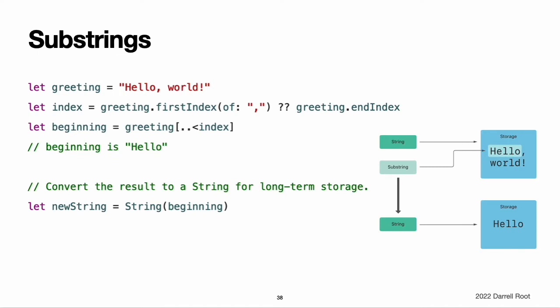Substrings. When you get a substring from a string — for example using a subscript or a method like prefix — the result is an instance of Substring, not another String. Substrings in Swift have most of the same methods as strings, which means you can work with substrings the way you work with strings. However, unlike strings, you use substrings for only a short amount of time while performing actions on a string. When you are ready to store the result for a longer time, you convert the substring to an instance of String. Like strings, each substring has a region of memory where the characters that make up the string are stored. The difference between strings and substrings is that, as a performance optimization, a substring can reuse part of the memory that's used to store the original string, or part of the memory that's used to store another substring.